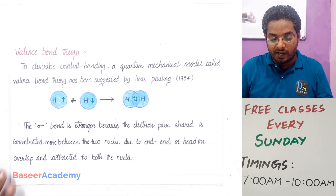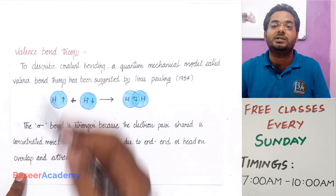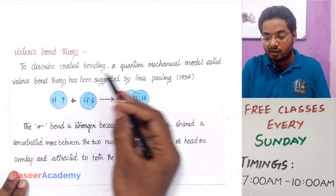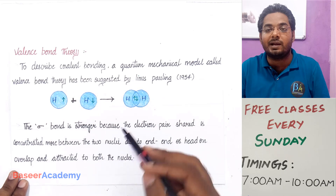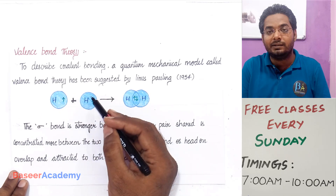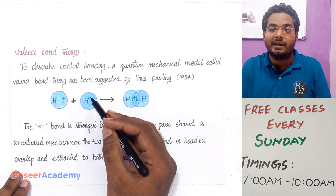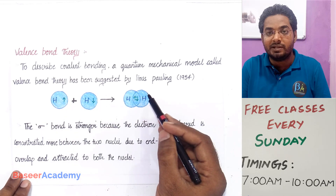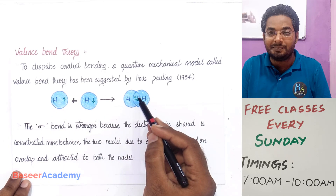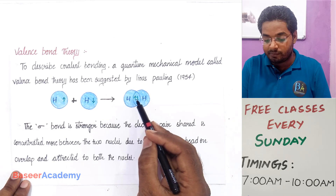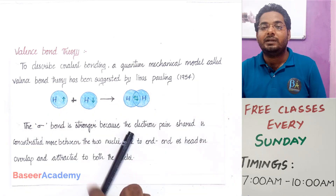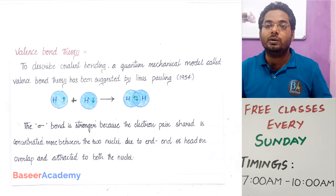Hi, my name is Basir. In this video I'll be teaching you about valence bond theory from chapter 8, chemical bonding, class 10 Telangana state syllabus. To describe covalent bonding, a quantum mechanical model called valence bond theory was suggested by Linus Pauling in 1954. It says that when two atoms come close to each other, the outermost orbitals containing unpaired electrons of opposite spin overlap. This overlap can happen in two ways — along the internuclear axis or sideways.